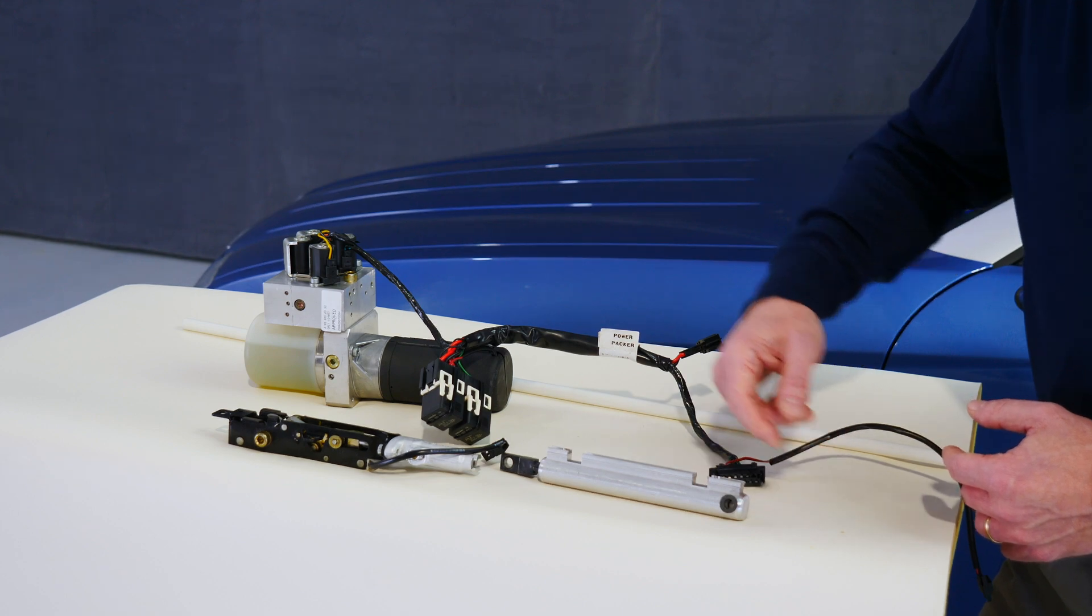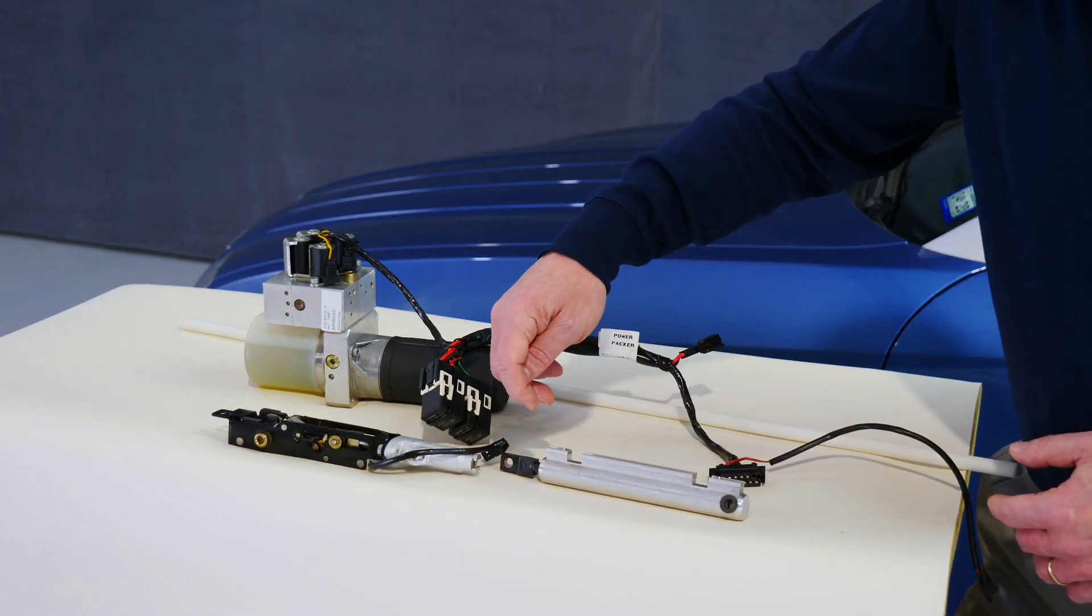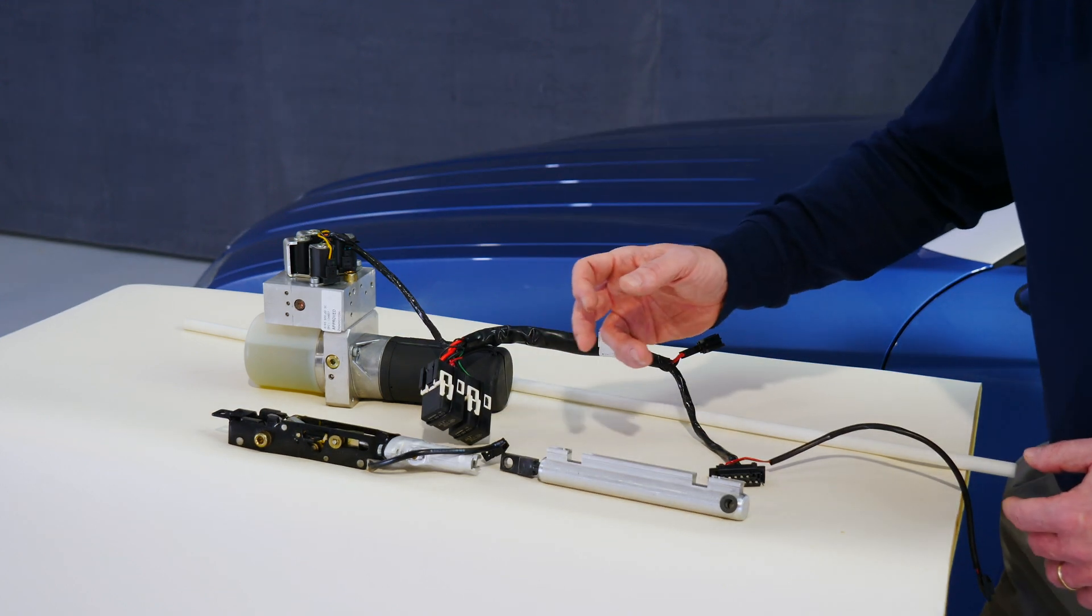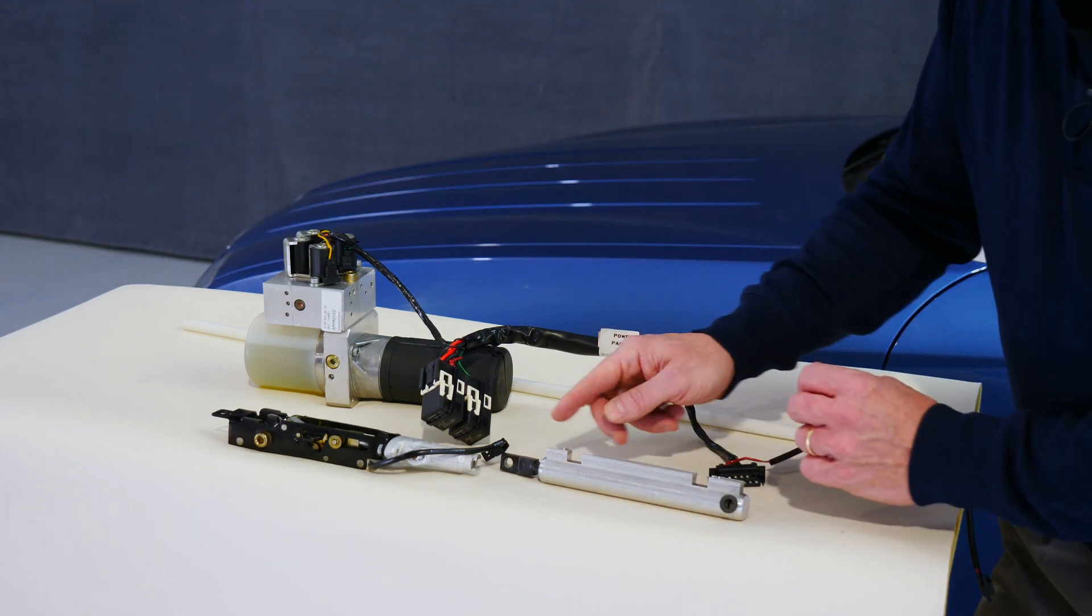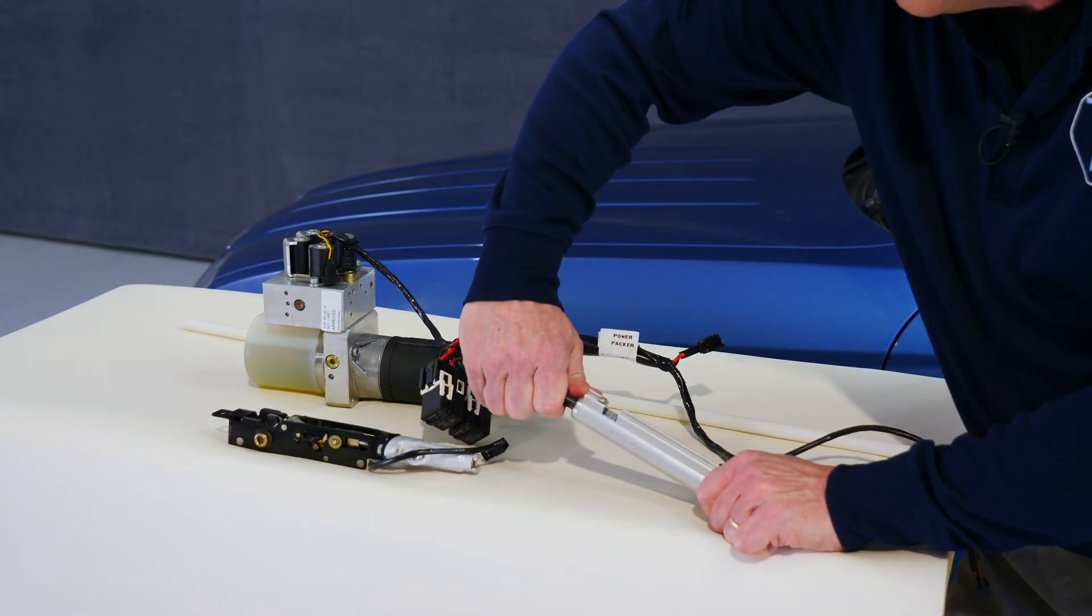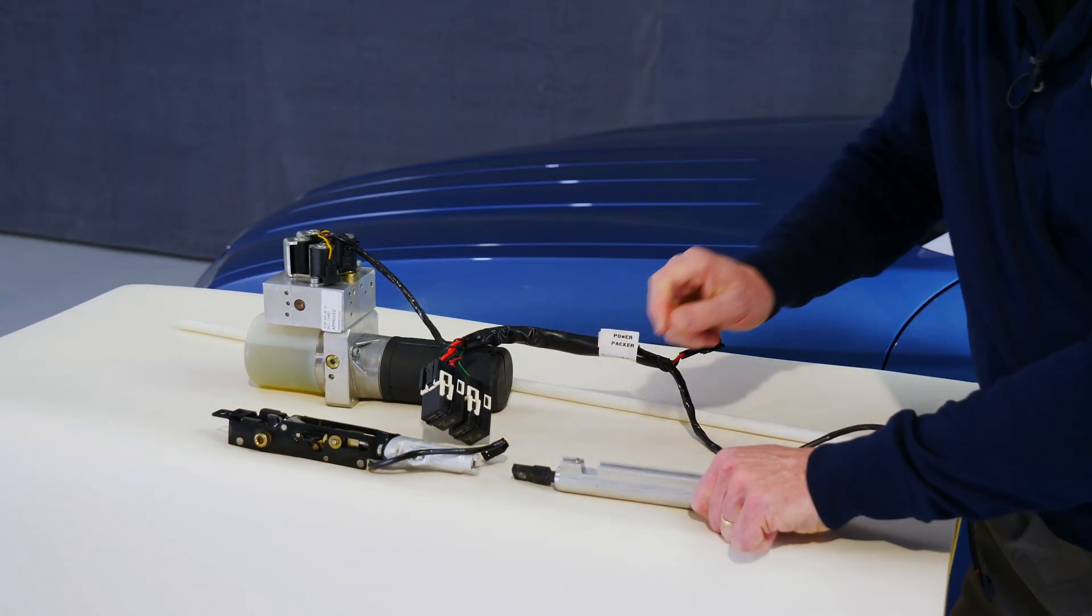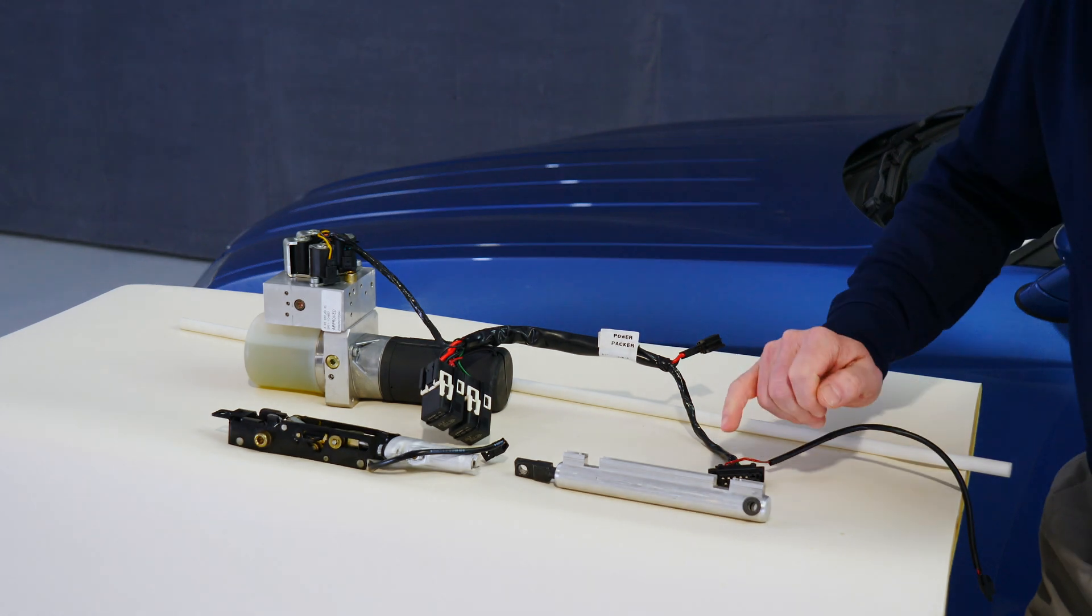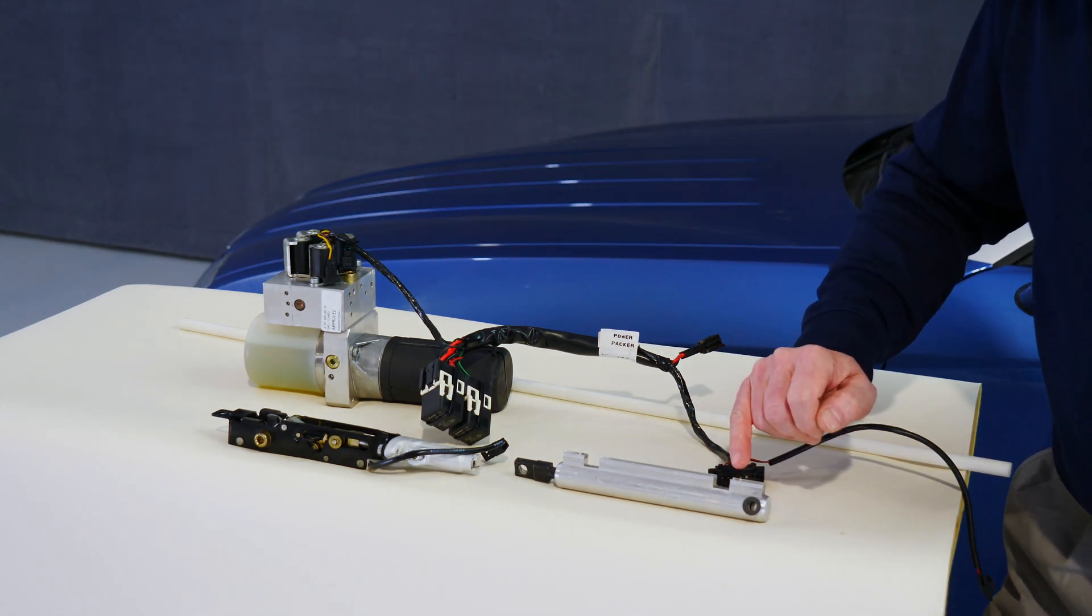It leaks first, then shortly thereafter it will leak on top the same way. Then you can have leaks from the rod seal that seals the rod sliding in and out of the cylinder. And potentially you could have leaks from the hydraulic line o-rings, but those...